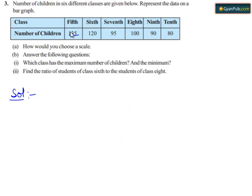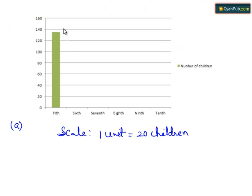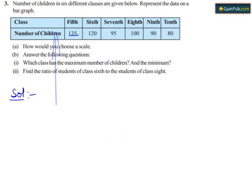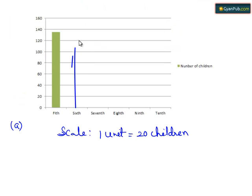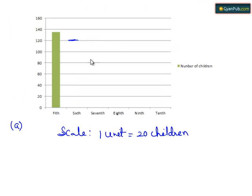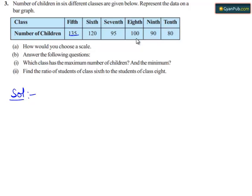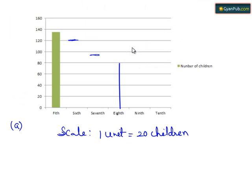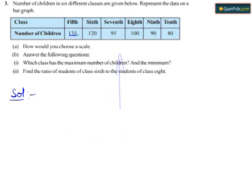For class 5th, there were 135 children, so plot a point between 120 and 140, that is at 135. For class 6th, the number of children were 120, so locate the point at 120. For class 7th, the number of children were 95, so locate the point between 80 and 100, that is at 95. For class 8th, the number of children were 100, so locate the point at 100.